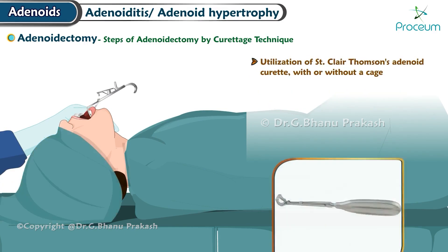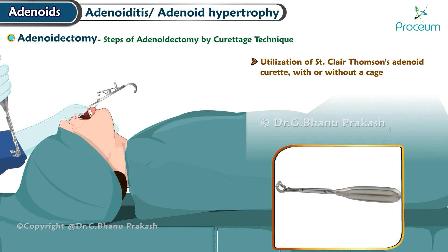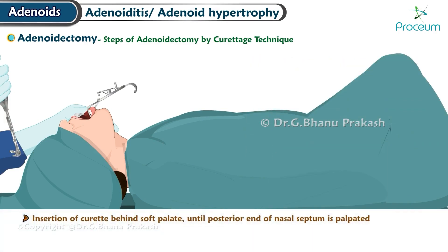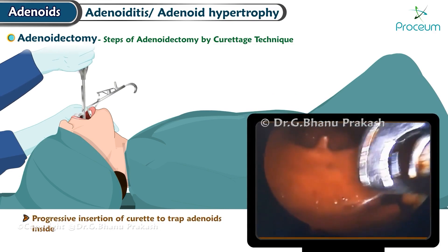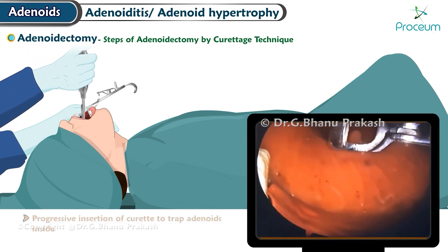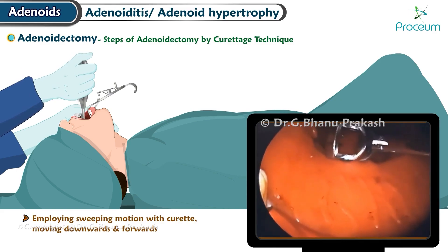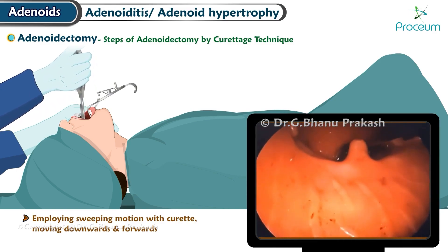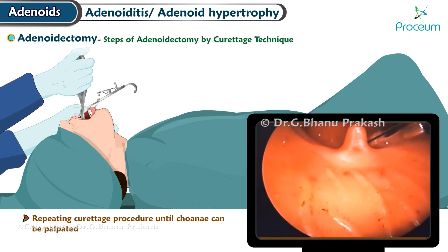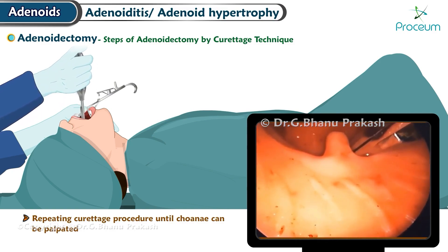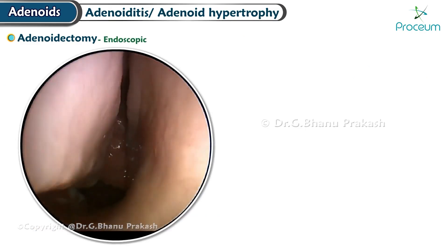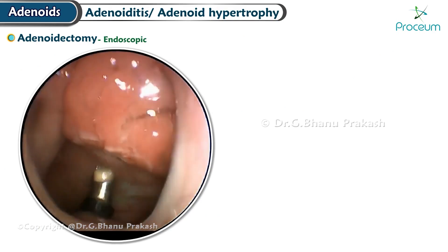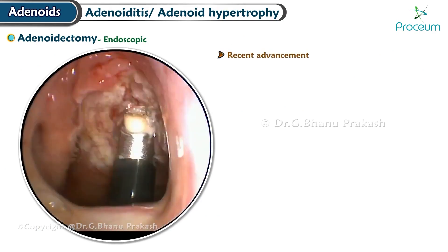Utilization of St. Clair Thompson's adenoid curette with orthotic cage: insertion of the curette behind the soft palate until the posterior end of the nasal septum is palpated; progressive insertion of the curette to trap the adenoids inside; employing a sweeping motion with the curette moving downwards and forwards; repeating the curettage procedure until the choanae can be palpated as being clear in the patient.